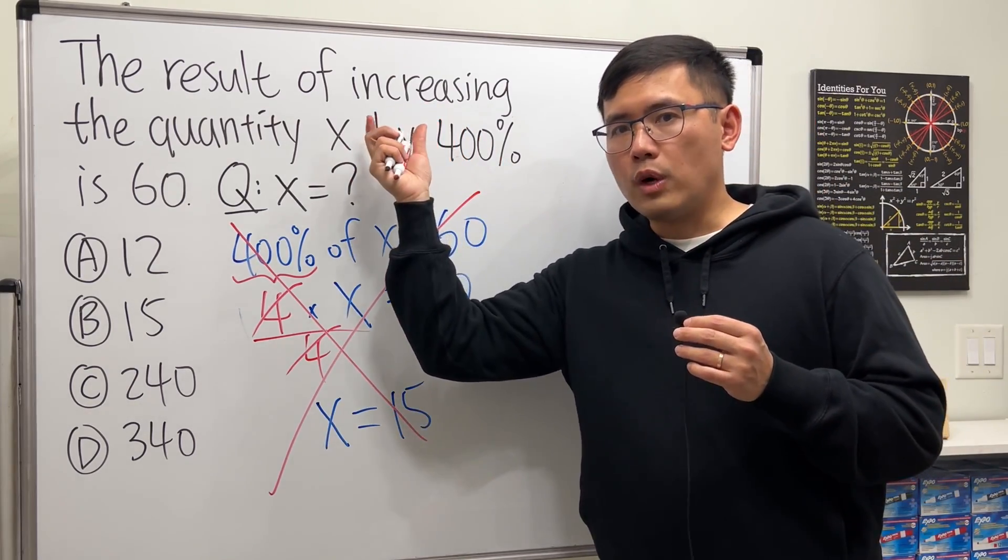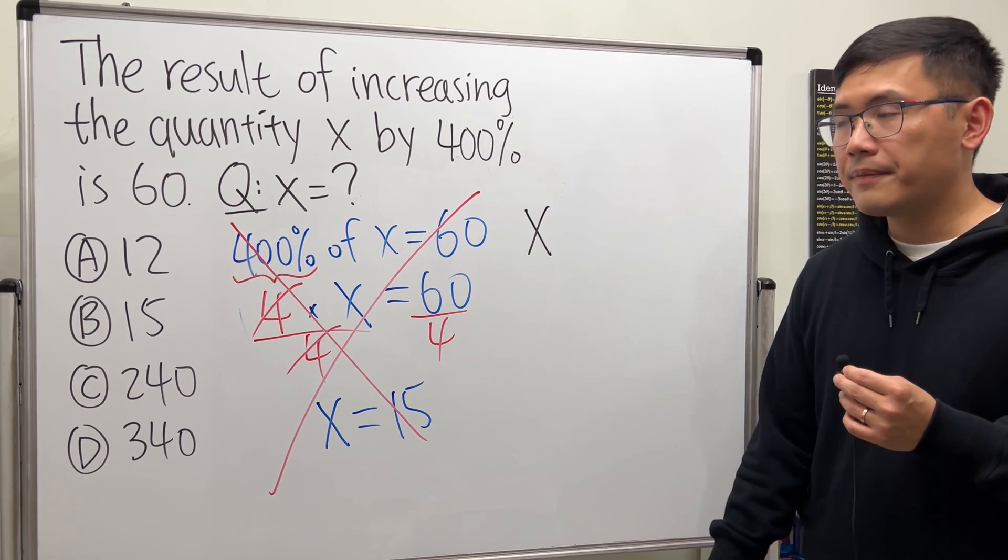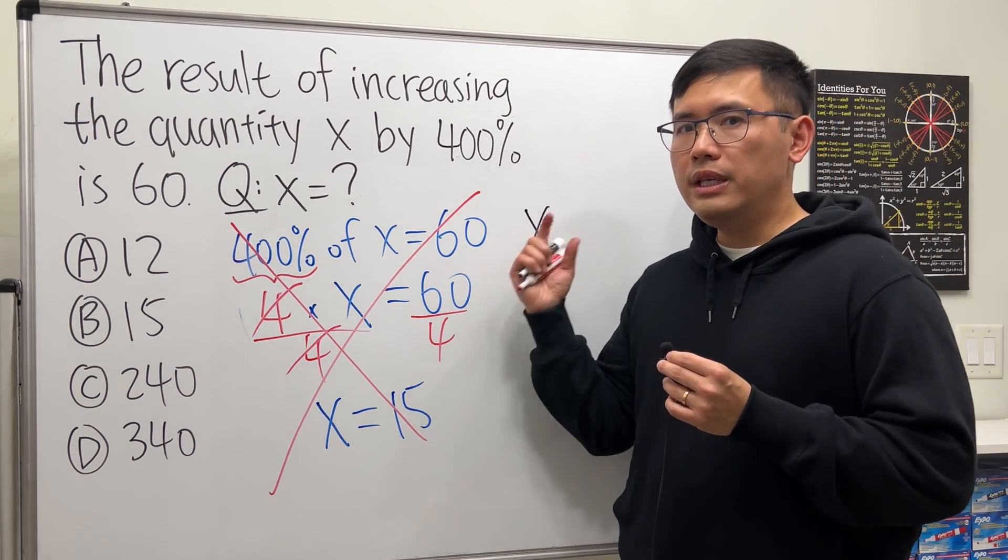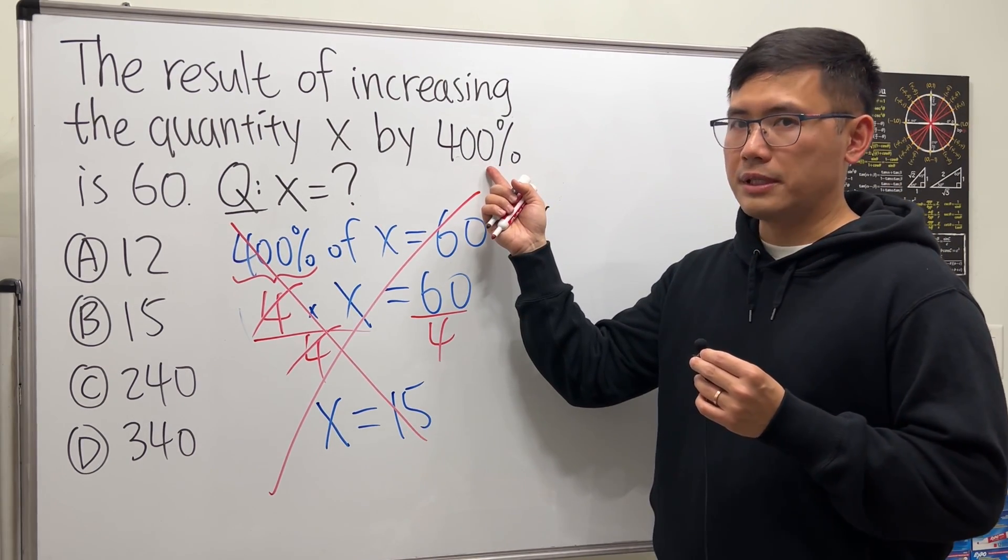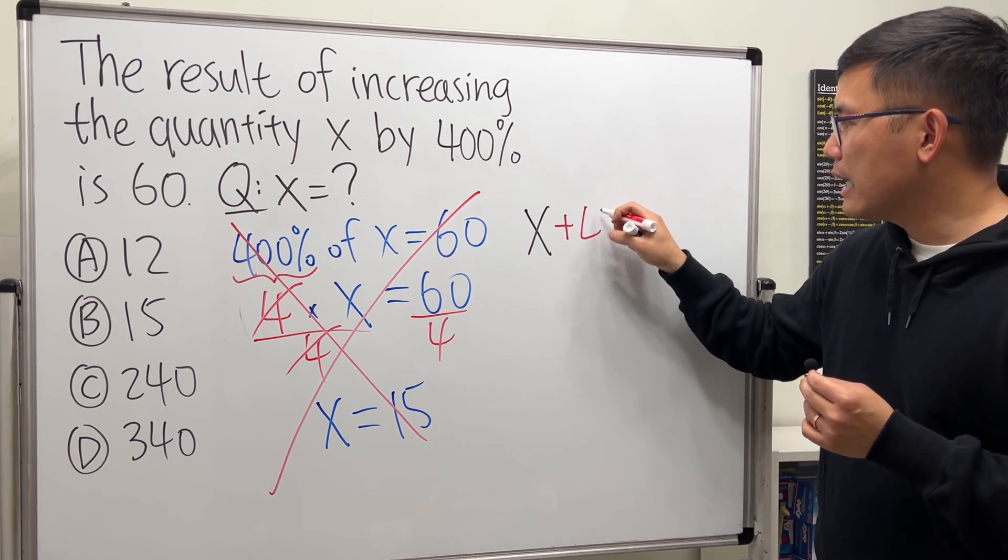What this is saying is that we start with the quantity x, so we have to write that down. Then we are going to increase x by 400 percent of it, so we have to add 4 times x.